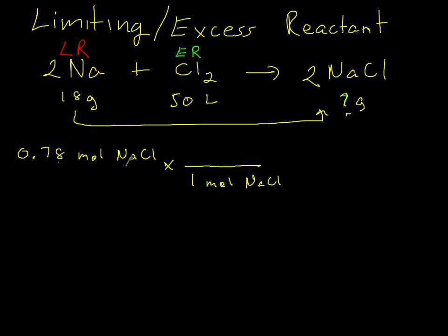We just do the additional step at this point which is to convert those moles into grams. So one mole of salt - let's round to 23 for sodium and chlorine is 35 and a half, I like to round the half there. So that's going to get you 58.5 grams per mole. When you punch that into your calculator you get 45.6 grams of salt. So that's how much salt we can make. If we have 18.3 grams of sodium and 50 liters of chlorine we could actually produce 45.6 grams of salt.